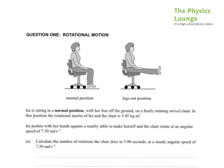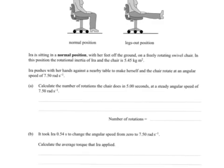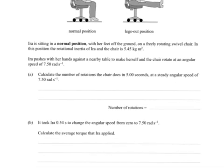Part A: Calculate the number of rotations that the chair does in 5 seconds at a steady angular speed of 7.50 radians per second. So steady angular speed, how many in one rotation? One rotation is equal to 2π.